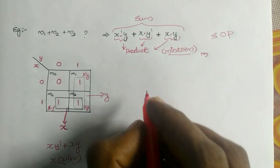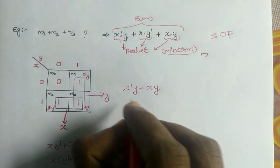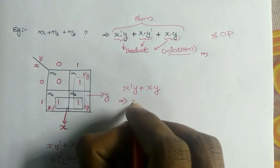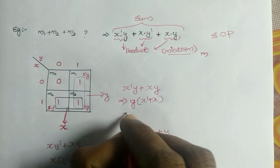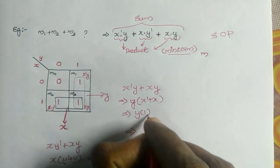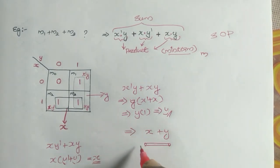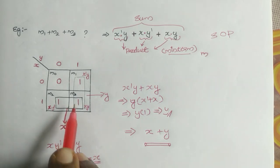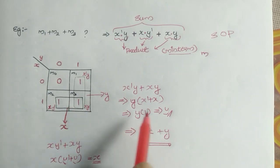Also, similarly, X bar Y plus X, Y implies Y into X bar plus X. That implies Y into 1, which equals Y. So we are summing X plus Y. So you can also get it like this. But we are using the K-Map method to make it fast, to make it simple. We can get the answer from here.